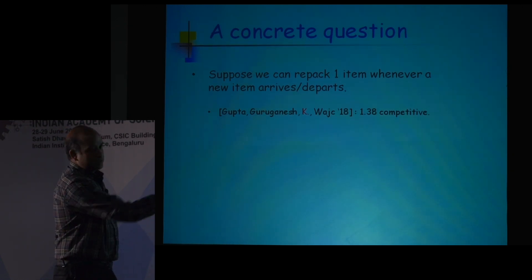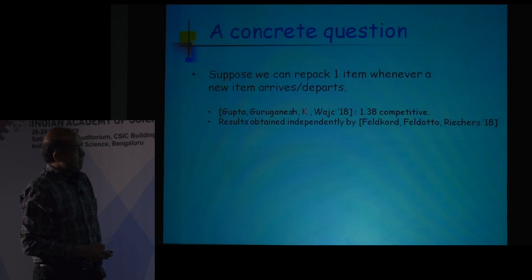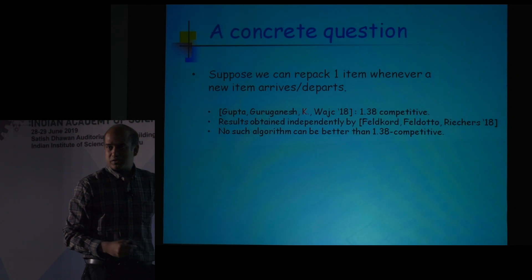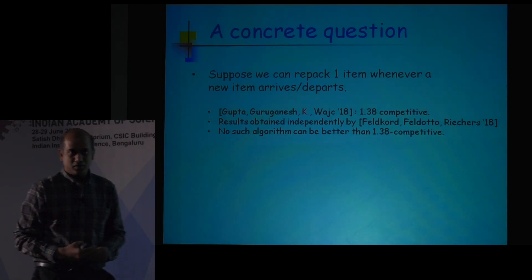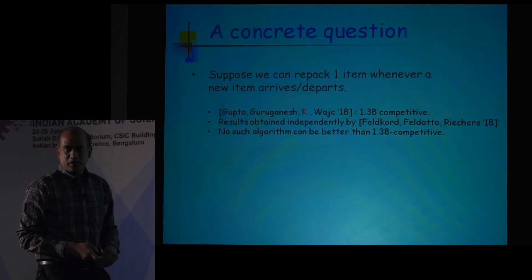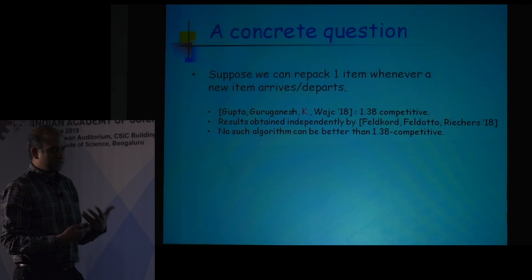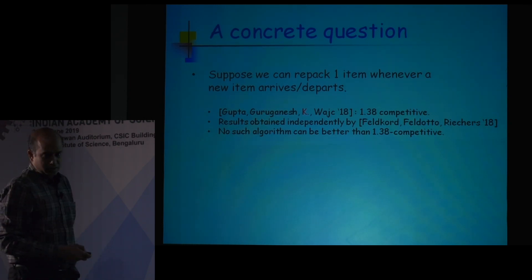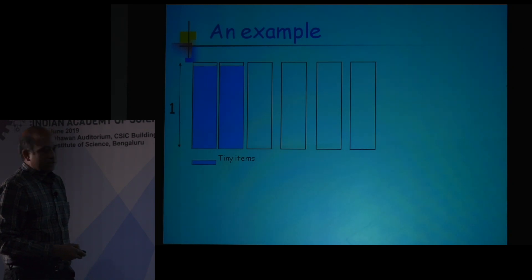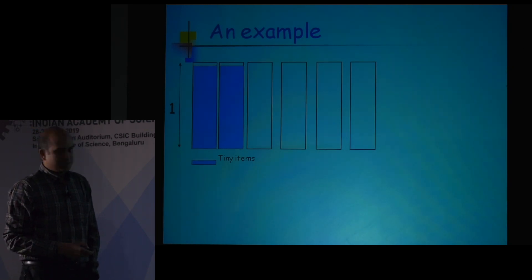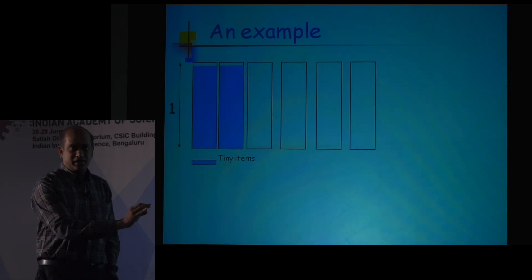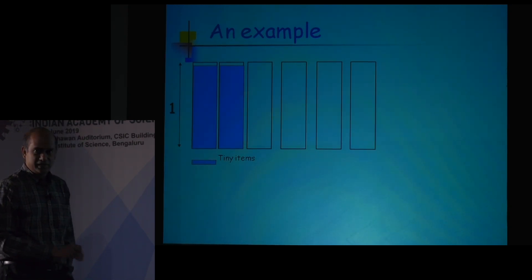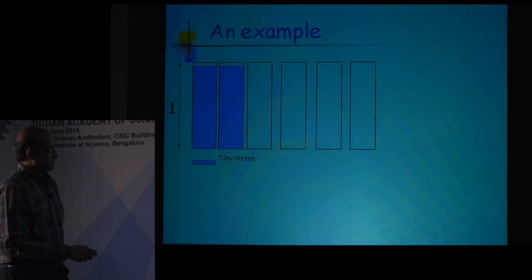You can prove this competitive ratio and also show that nobody can do better, so there is no gap here — you can also meet this lower bound. In that sense we prove the optimal possible fact here.